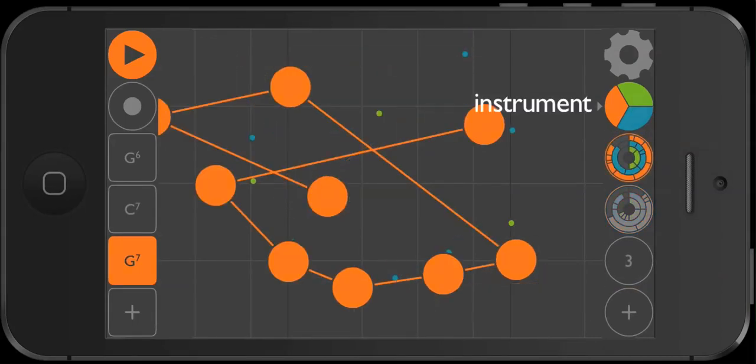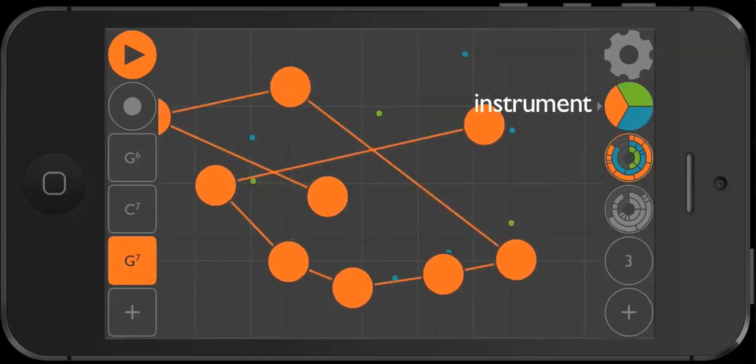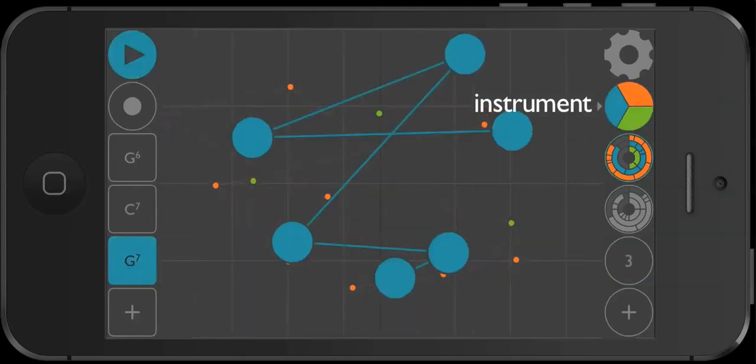Above these pattern buttons is the instrument button. There are three instruments: lead, bass, and drums. Each instrument has its own layer in a pattern. Tap this button to switch which instrument layer you're on.